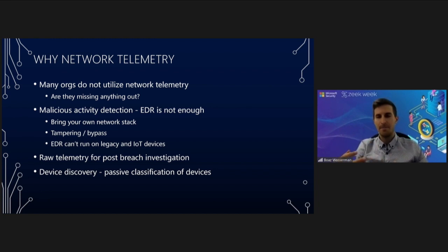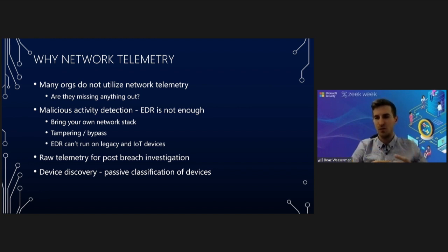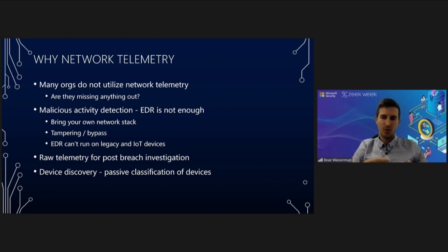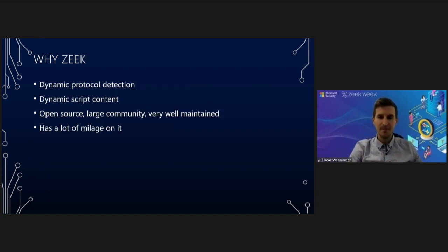Beyond malicious activity detection, there are two additional scopes. First, raw telemetry aggregated over time is invaluable for post-breach investigation. In many IR cases I've handled, not having this network telemetry was a big challenge. In organizations that did have a robust infrastructure for analyzing and aggregating network telemetry, it was easy to track what the attacker was doing — having all NTLM and Kerberos authentications over the wire is a gold mine. Lastly, device discovery: looking at traffic in and out of a device can reveal the purpose and installed software.